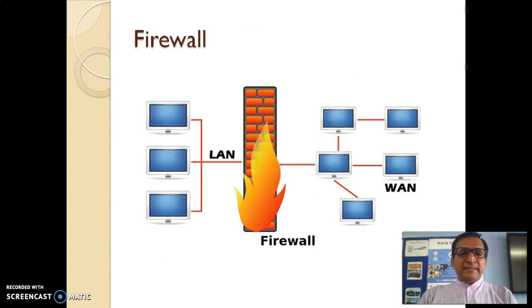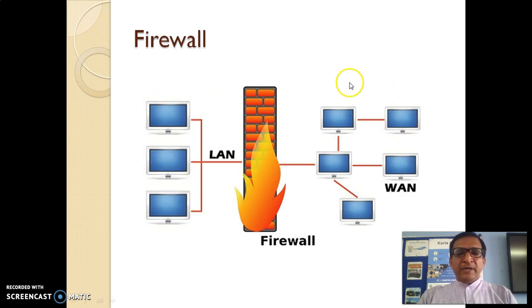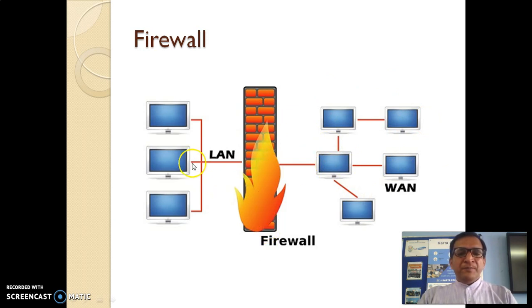On the left-hand side we have a LAN, which is the intranet, and on the right side is a WAN, which is the internet. The firewall sits in between and examines all transactions back and forth.